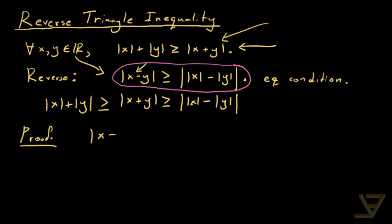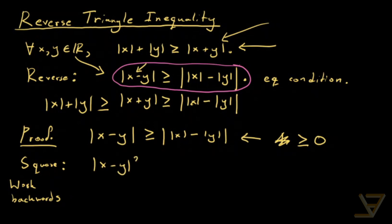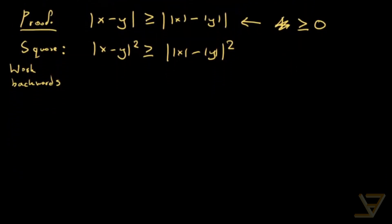So let's do the first proof. We want to prove that the absolute value of x minus y is greater than or equal to the absolute value of x minus the absolute value of y. We square both sides — and I want to emphasize that squaring is reversible because both sides are non-negative. So we square both sides and we're working backwards. We get the left side squared greater than or equal to the right side squared, and because we're squaring, we can drop the absolute values on the outside.